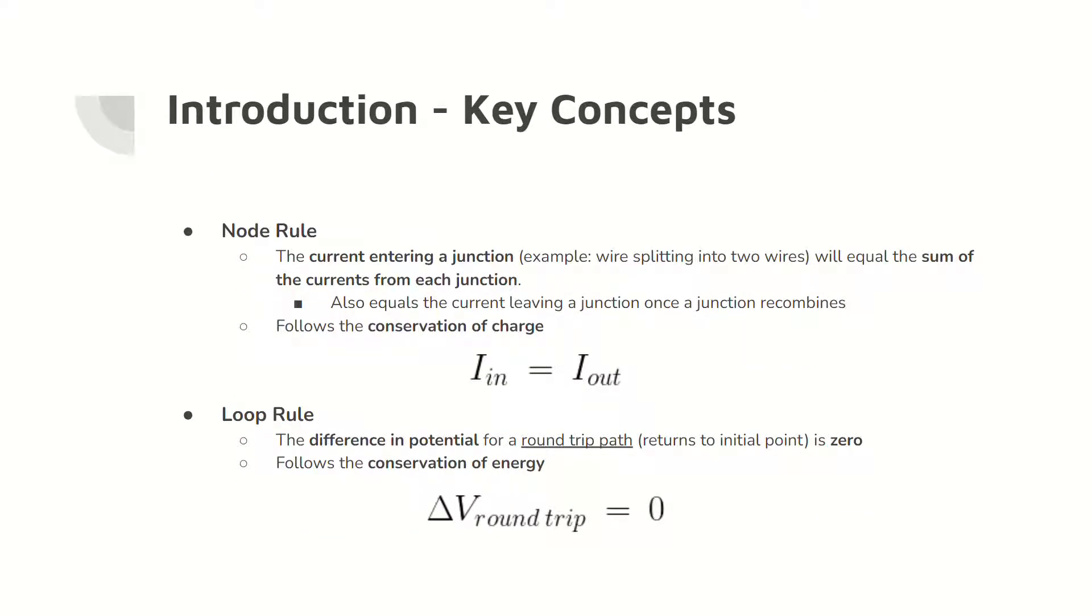Two key concepts are the node rule and the loop rule. The node rule states that at a junction, the current entering the junction equals the sum of the currents from each fork of the junction. When the junction recombines, the node rule states that the current entering the junction equals the current leaving the junction.